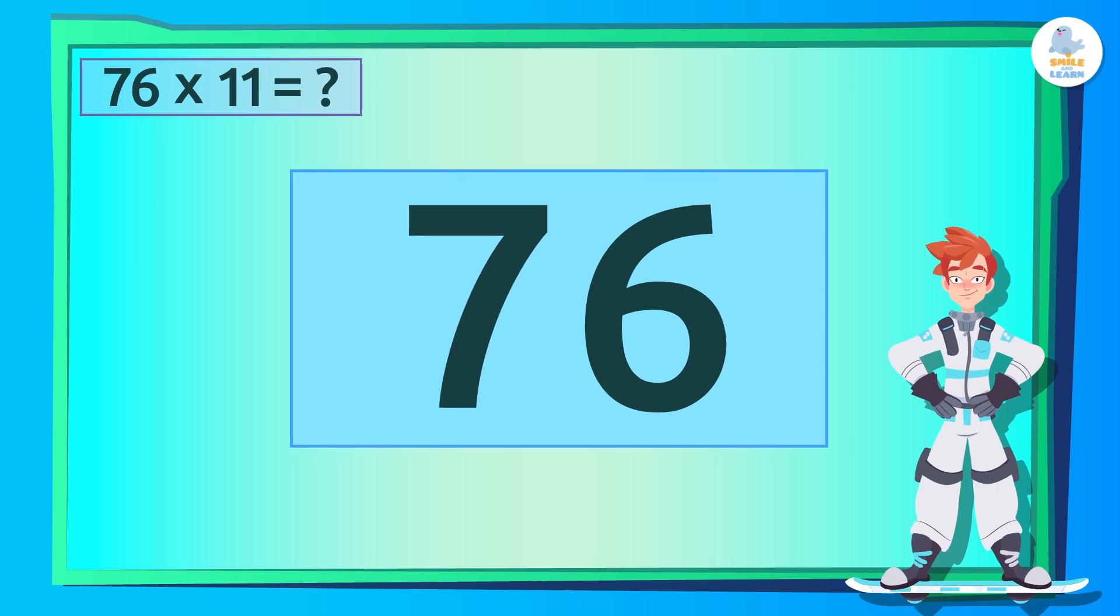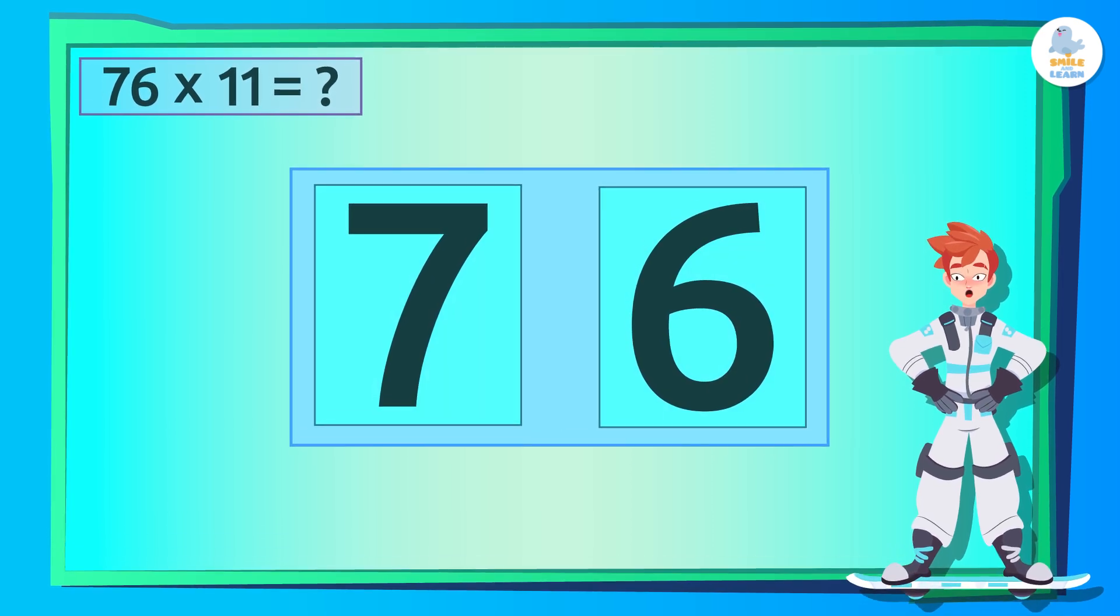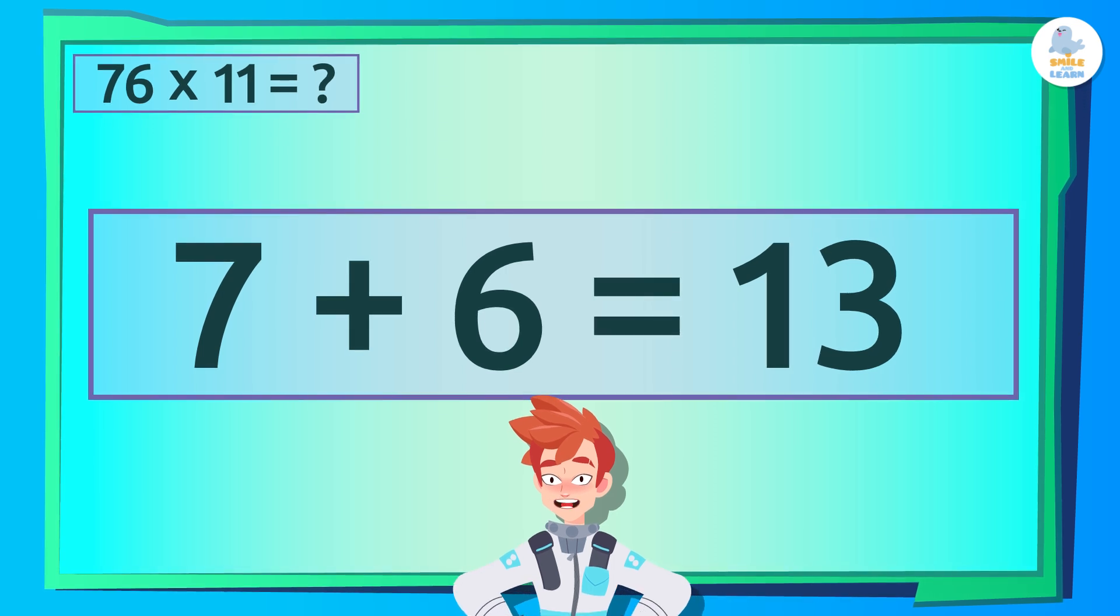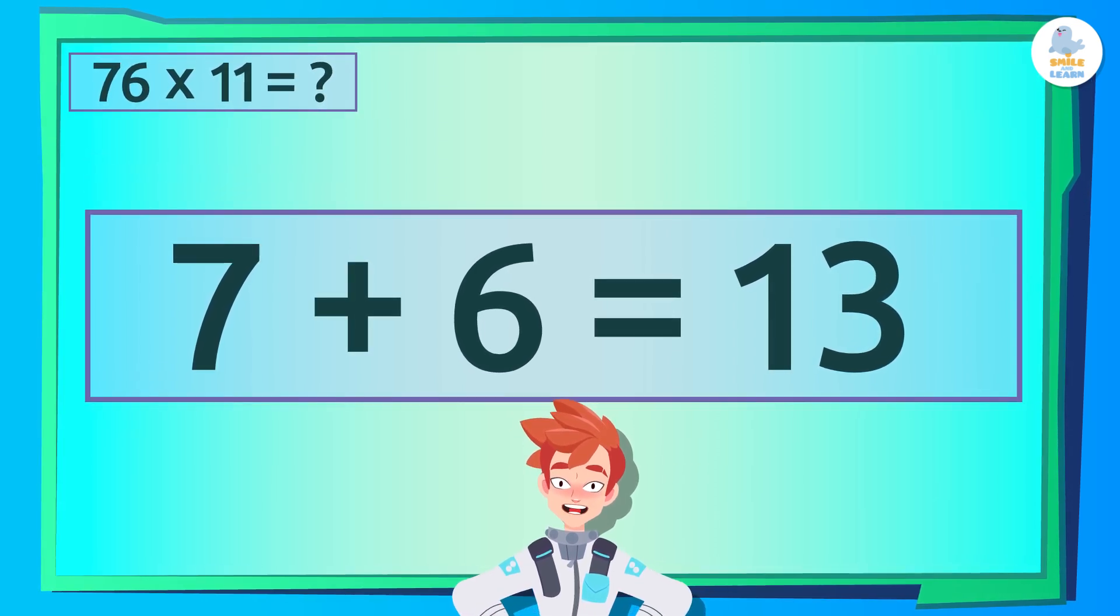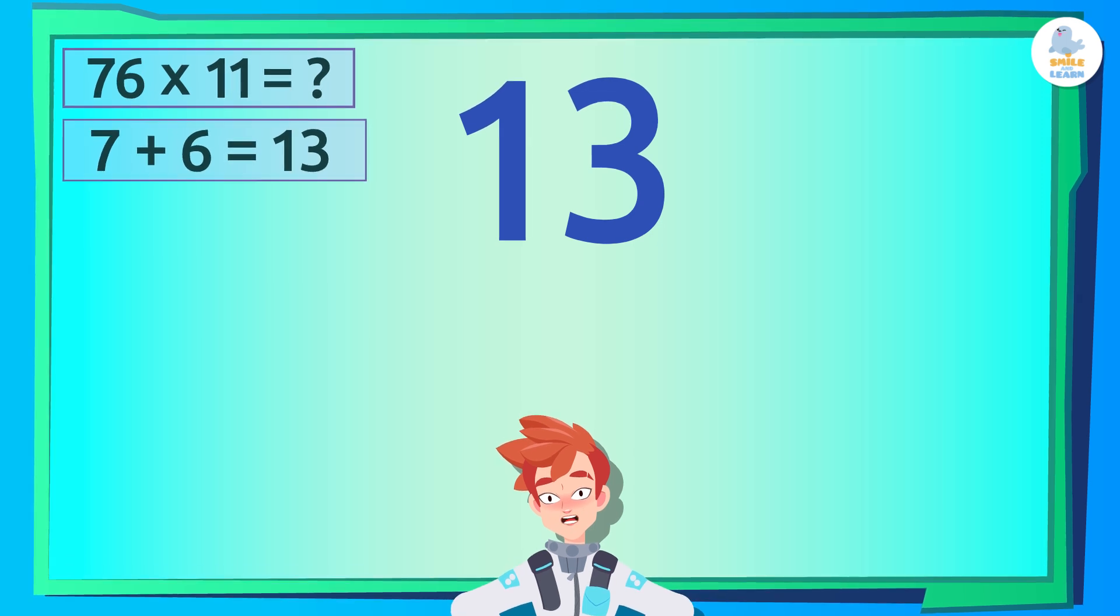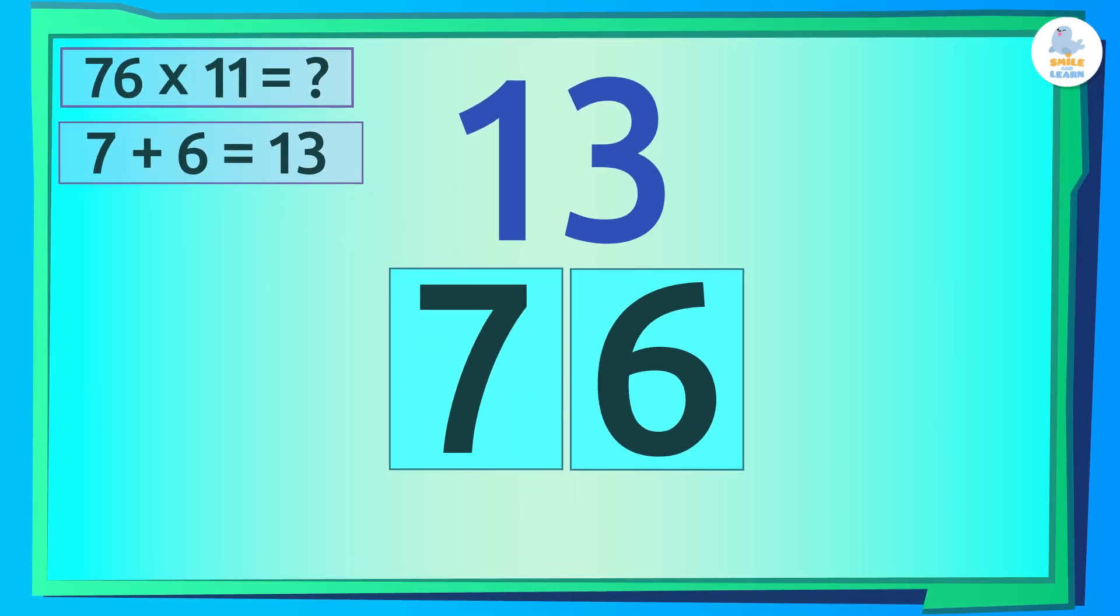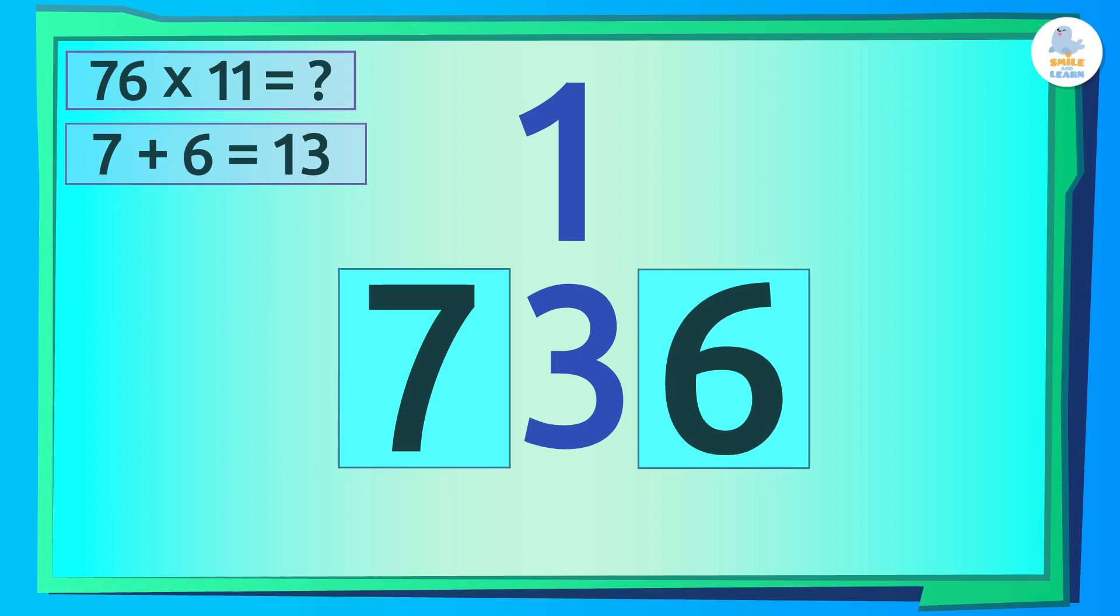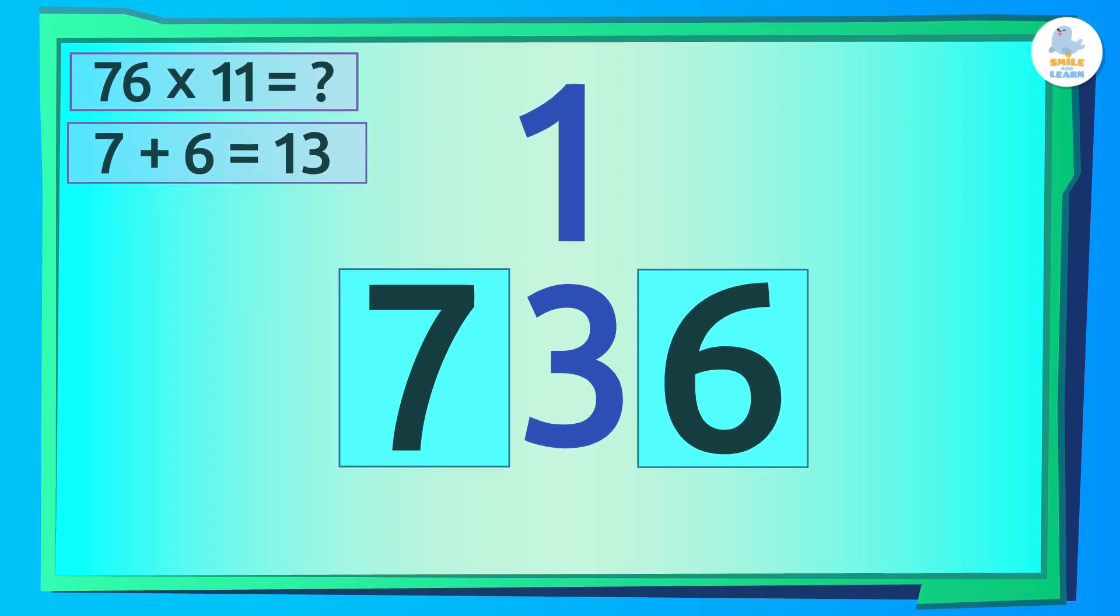Let's do the trick. We'll start by separating the digits 7 and 6 and then add them together. 7 plus 6 is 13. But, what? 13 has two digits! Where do we put the 13 in this case? We put the 3 in the middle and add the 1 to the first digit.